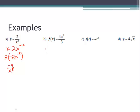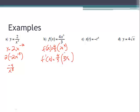For letter b: f prime of x. Pull out four-thirds as the coefficient, then take the derivative of x to the third, which is 3x squared. So f prime of x equals four-thirds times 3x squared. Simplifying, four-thirds times three becomes just four, giving f prime of x equals 4x squared.